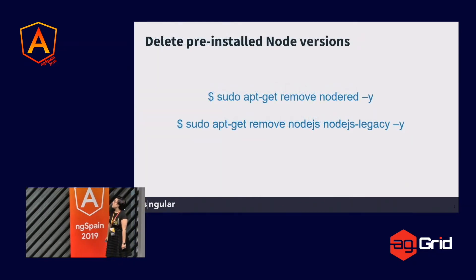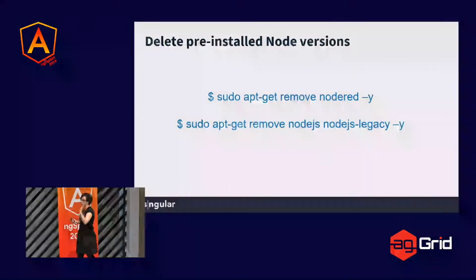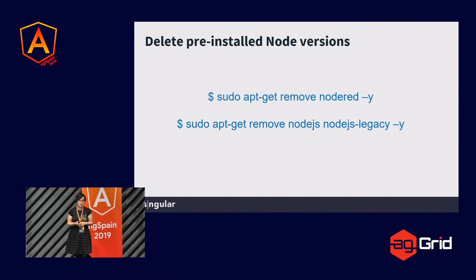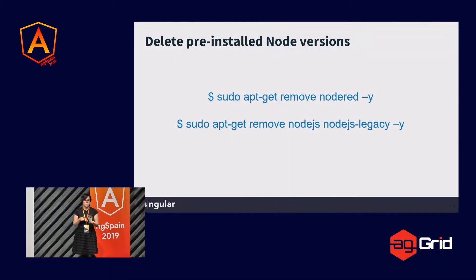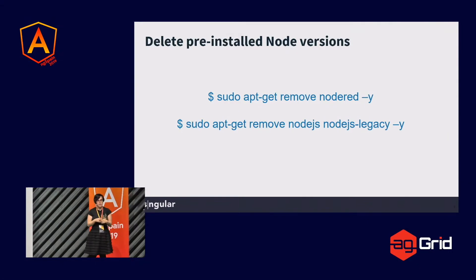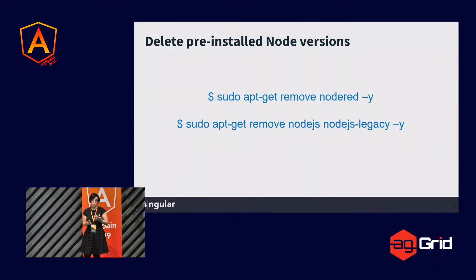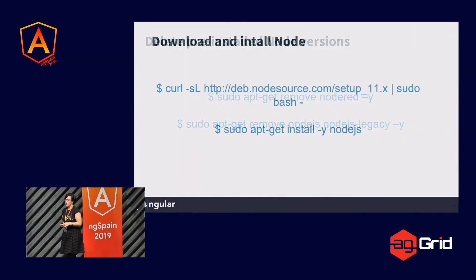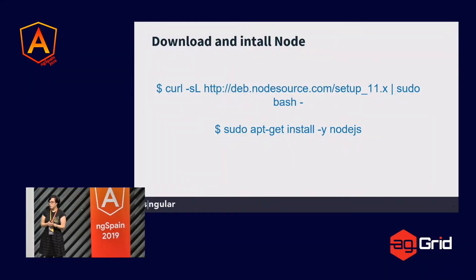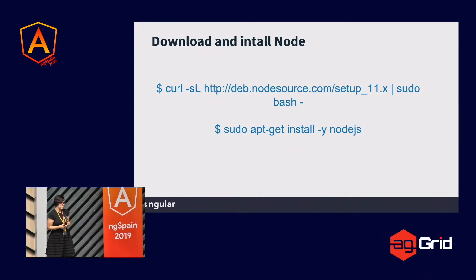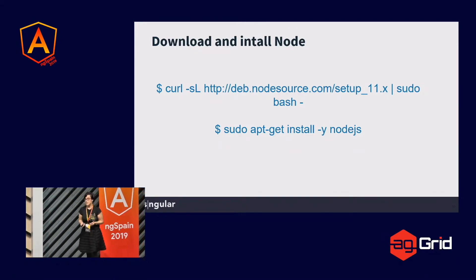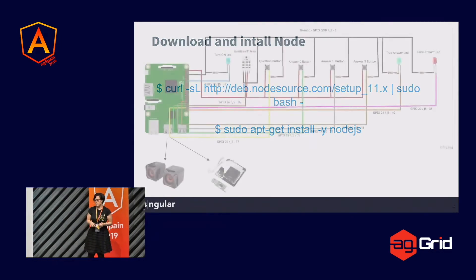The next step that we recommend is to delete the pre-installed Node versions, because a Raspberry Pi and Raspbian come with Node pre-installed, but it's a very old version. So we prefer to delete it, and then we download it from the net with this command and install the latest version in our Raspberry Pi, which will facilitate a lot of our development.